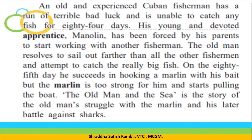His young and devoted apprentice — now an apprentice is like a student — Manolin has been forced by his parents to start working with another fisherman. Manolin, of course, wants to work with his master or his teacher. But his parents feel that this man is of no use, he is not able to catch a single fish, so he will be a bad influence on their son. So they don't want the young Manolin to work with the old fisherman. The old man resolves to sail out farther than all the other fishermen and attempt to catch the really big fish. He is hurt because he is a very experienced fisherman and feels very bad that the parents of Manolin don't trust him. So he decides: I will go far away and I will attempt to catch some really big fish from the deep seas.